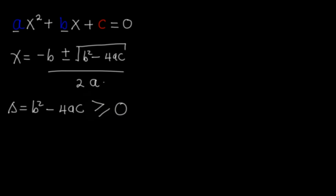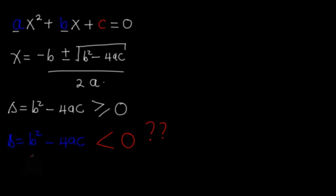Now I have a question. What happens if the discriminant D, which is B² − 4AC, is less than 0? In today's lesson, we are going to base our discussion on such a scenario.